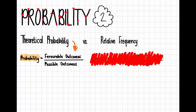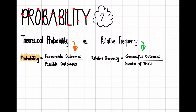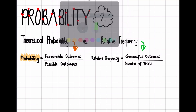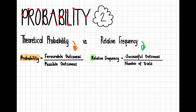Then we get to relative frequency. Relative frequency is the number of successful outcomes over the number of trials. Relative frequency is after an experiment or an event has occurred, whereas probability is before the event or the experiment has occurred.